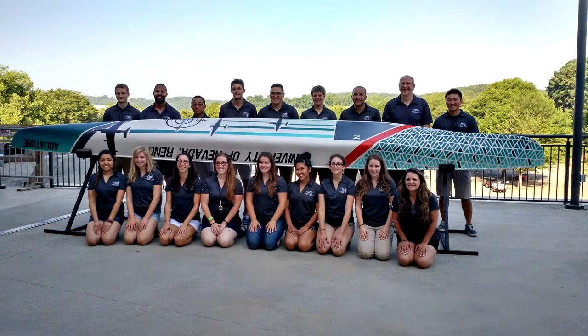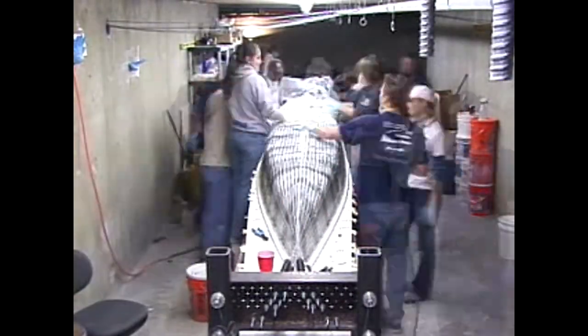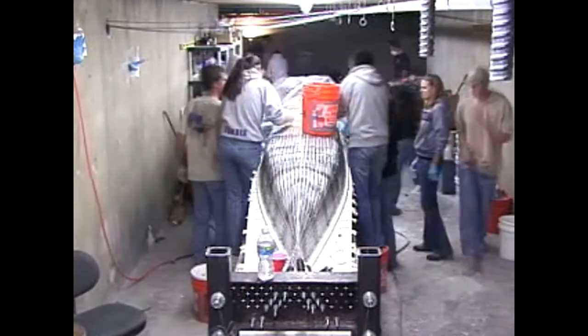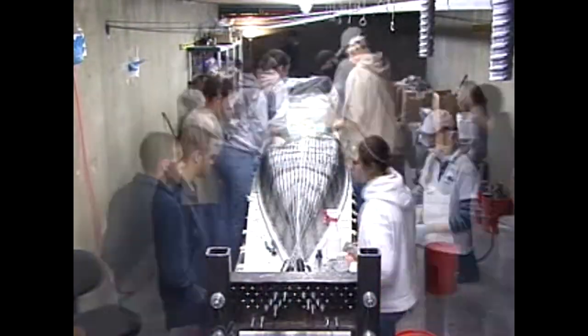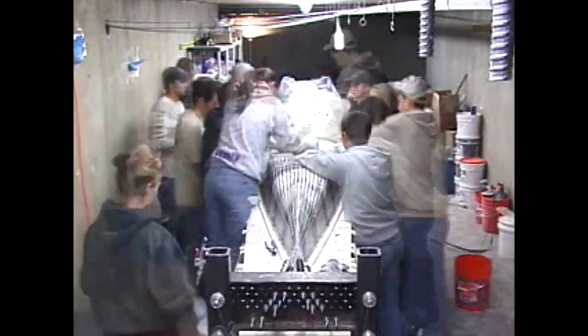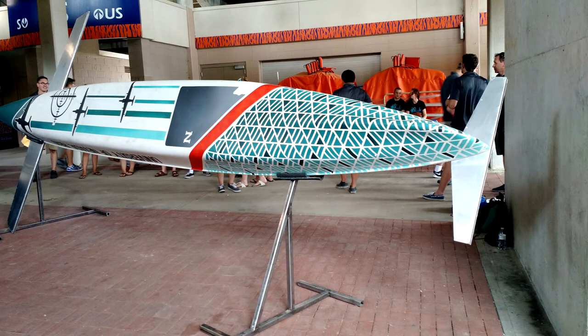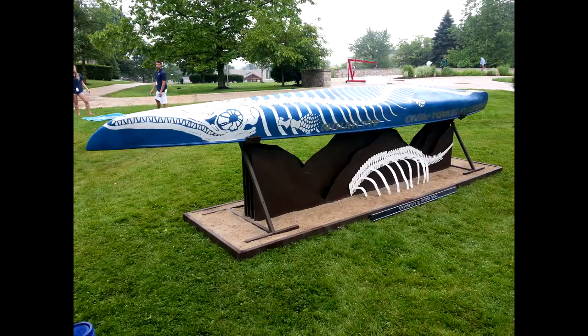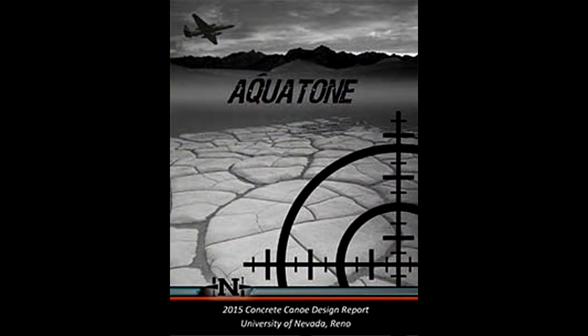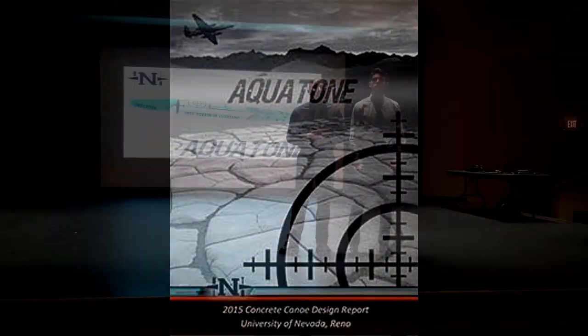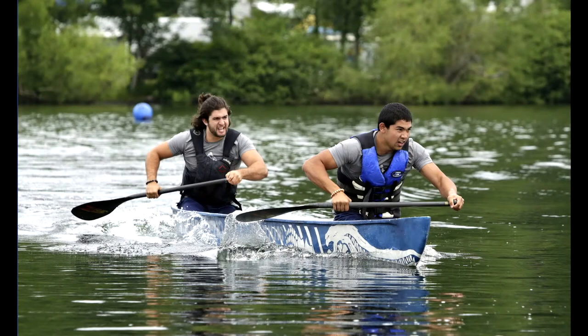One of these design competitions is called the Concrete Canoe Competition. Students have to design and build a canoe made completely of concrete. The teams are judged in four categories – final product, technical design paper, oral presentation, and paddling.